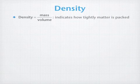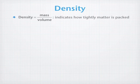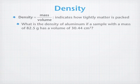Another important derived unit is the density. Density is the mass divided by the volume. It indicates how tightly packed matter is together. So, if we have an aluminum sample with a mass of 82.5 grams and it has a volume of 30.44 cubic centimeters, what is its density?